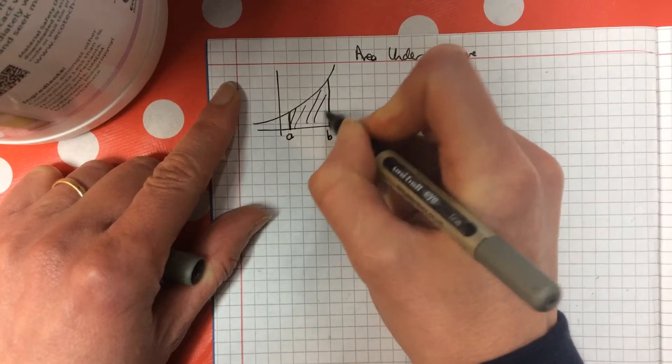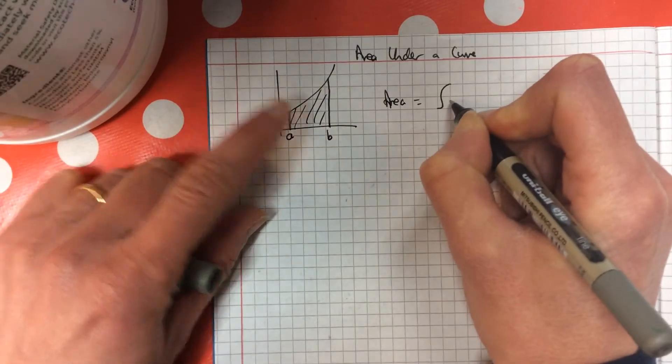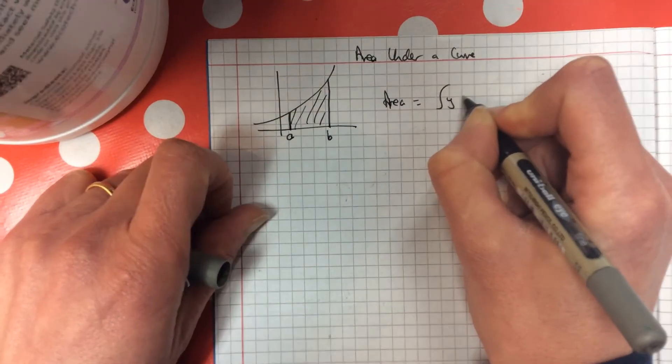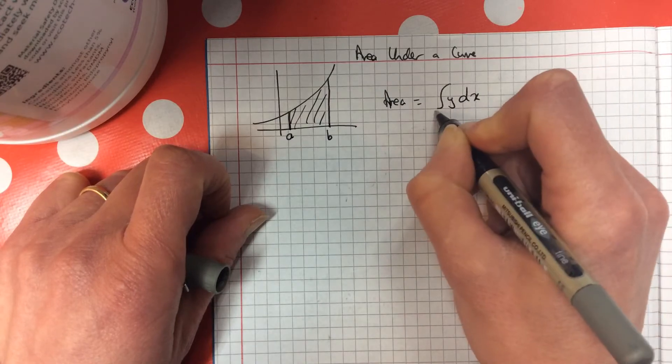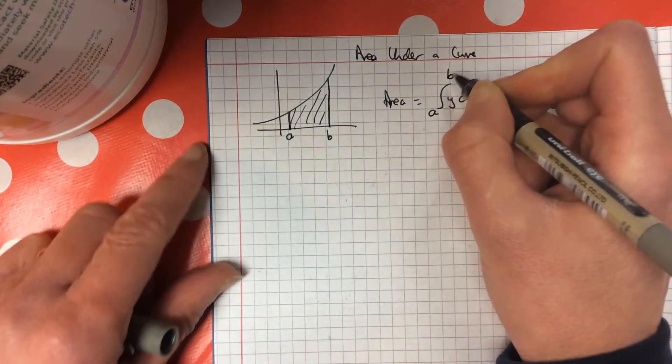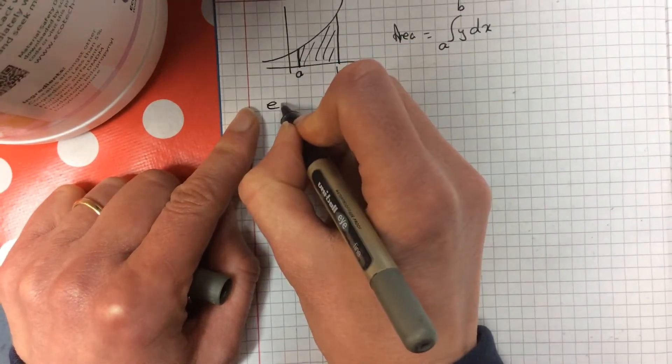If I want this area, the way you find it is you integrate the curve, which is your y. So integrate your y curve with respect to x between a and b. That's a very complicated way of saying something quite straightforward that you have been doing.